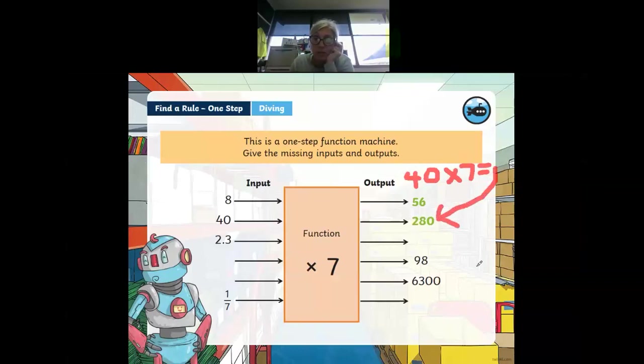Have a go at the rest yourself. Do not get tricked by these two. With these two you are starting with the output number and working backwards so you'll have to think about what the opposite to multiply seven is. The opposite to multiplication is division so it'll be dividing by seven to get the input number. See how you go with that.